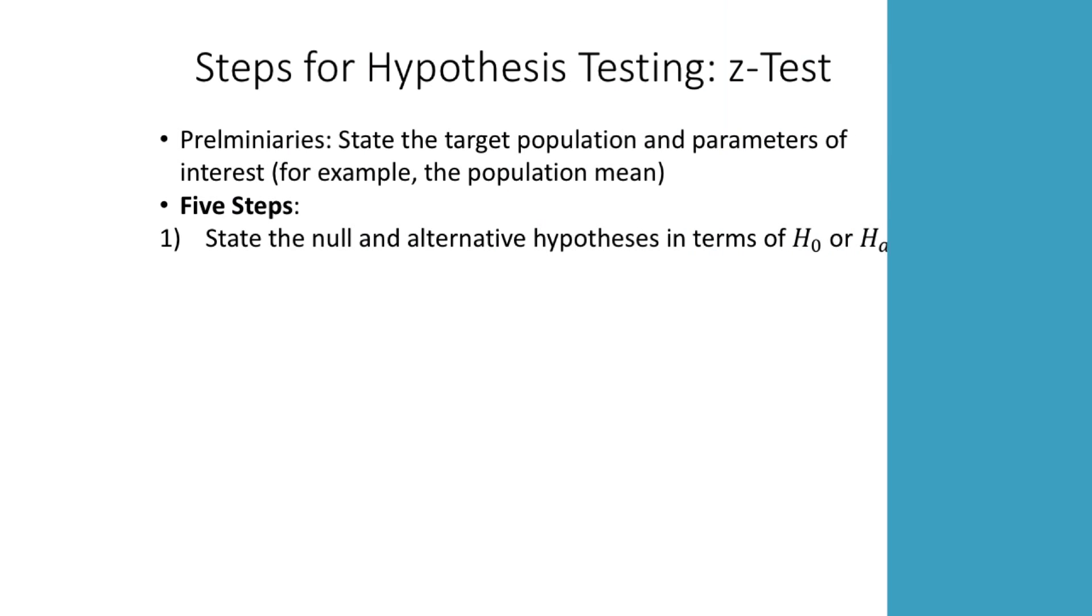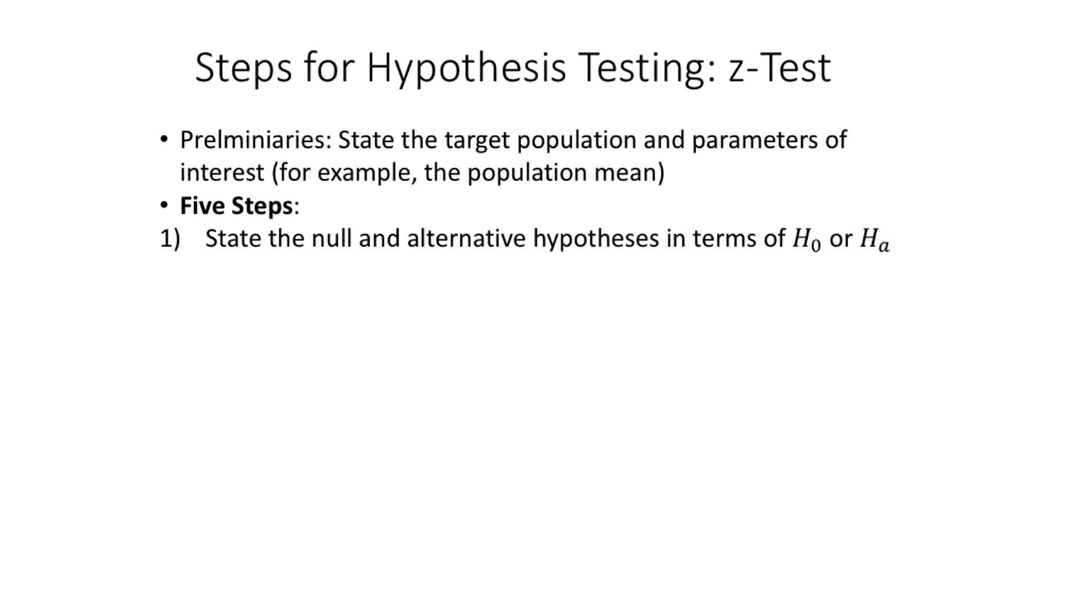Once you have those preliminaries out of the way, we have five tests once you know you're interested in the population mean. First is you state the null and alternative hypotheses in terms of H subscript 0 or H subscript A. Sometimes you'll hear H subscript 0 called H naught. The key point is that you need to express your hypotheses in this language.